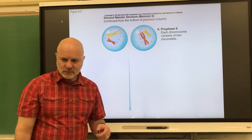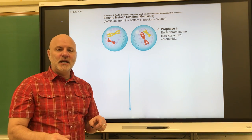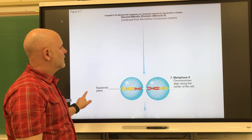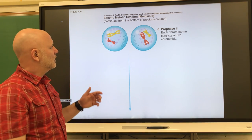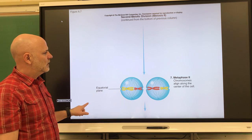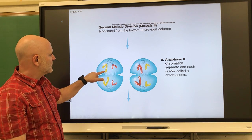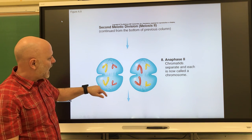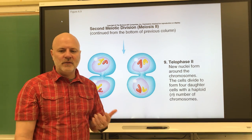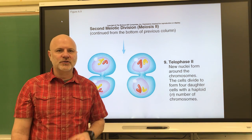In meiosis two, we start off with two haploid cells, each containing 23 chromosomes. In this case, we're going to separate sister chromatids from each other — very similar to mitosis. In prophase two, chromosomes become visible. In metaphase two, chromosomes are lined up in the middle of the cell. In anaphase two, sister chromatids are separated and move to opposite ends of the cell — 23 moving this way, 23 that way, 23 moving this way, 23 moving that way. In telophase, that ends with four cells, each having 23 chromosomes — half of our normal genetic information.